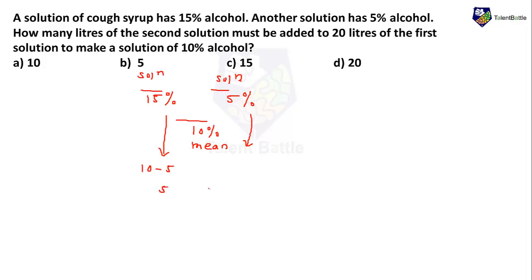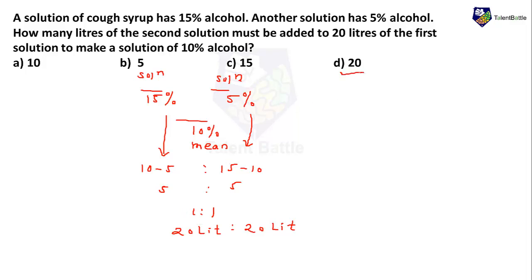In alligation, to find the ratio in which to add the two solutions, write down 15, 5, and 10. Below 15, take the difference with the mean: 10 − 5 = 5. Below 5, take the difference with the mean: 15 − 10 = 5. So the ratio is 5:5, which means 1:1. Since Solution 1 is 20 liters and the ratio is 1:1, Solution 2 must also be 20 liters.